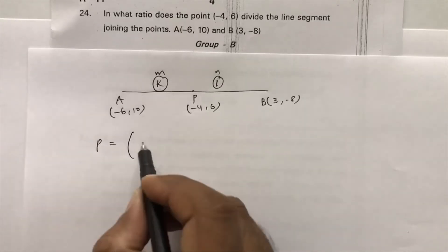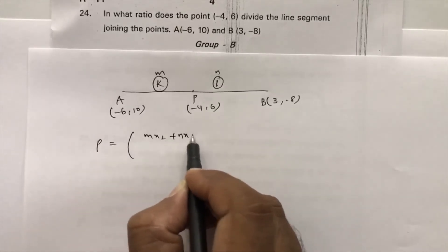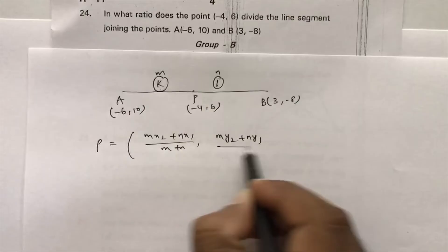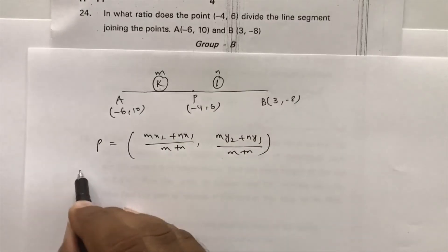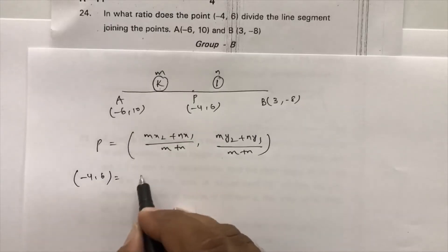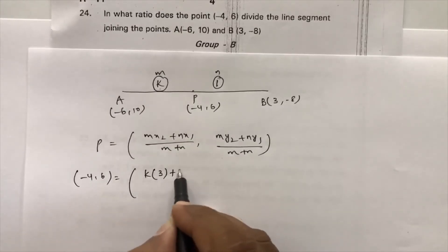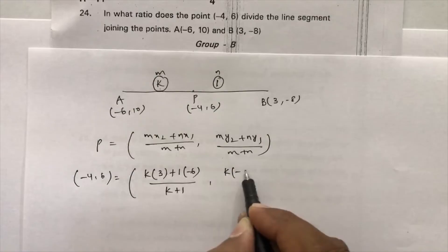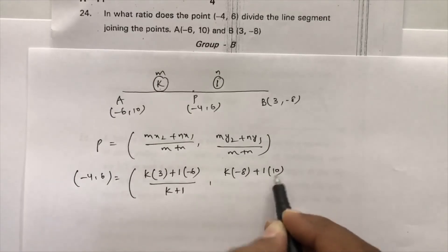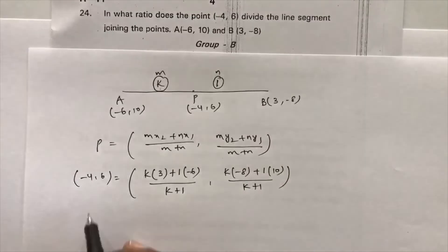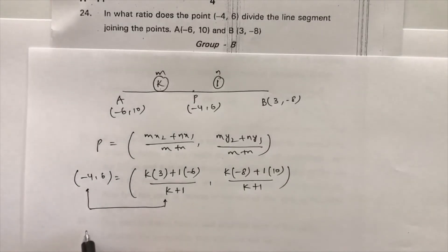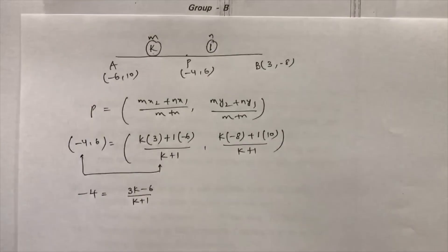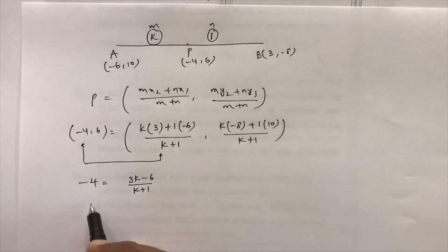Using the section formula again: x = (m·x2 + n·x1) / (m + n), y = (m·y2 + n·y1) / (m + n). Substituting with k instead of m and 1 instead of n: (-4, 6) = ((3k + 1·(-6)) / (k + 1), (k·(-8) + 1·10) / (k + 1)). Equating the abscissa: -4 = (3k - 6) / (k + 1).